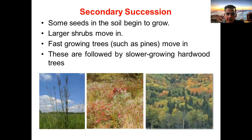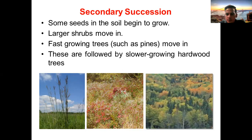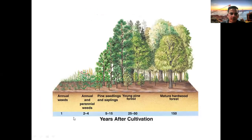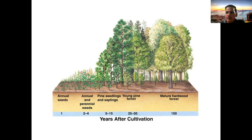In secondary succession, the seeds in the soil begin to grow. Once there are small annual plants, larger shrubs can come up in a couple of years, followed by fast-growing trees such as pines. These are later followed by slow-growing hardwood trees which are the members of the climax community. Annual weeds can later be followed by annual and perennial weeds, with pine seedlings and saplings coming up. These young pines growing faster ultimately give way to the final matured hardwood forest, with the whole timeline around 150 to 200 years.